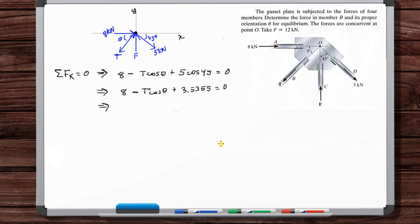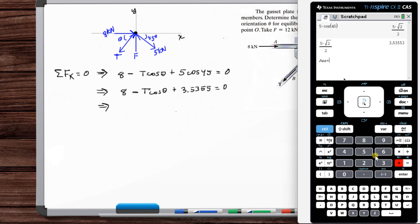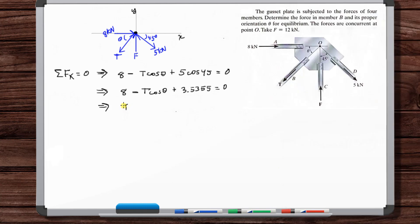Okay, and so adding eight to 3.5355, we get 11.5355. So that means we get T cosine theta is equal to 11.5355.